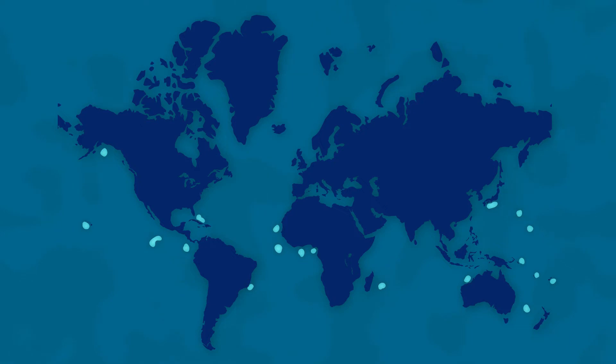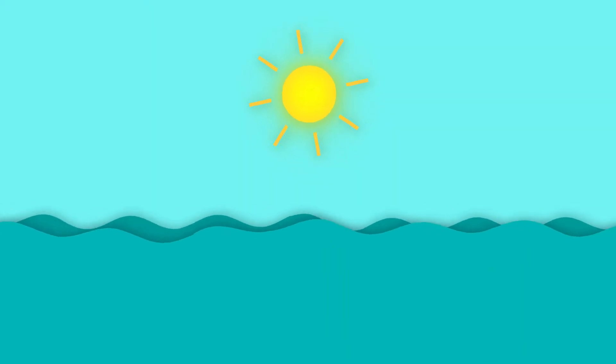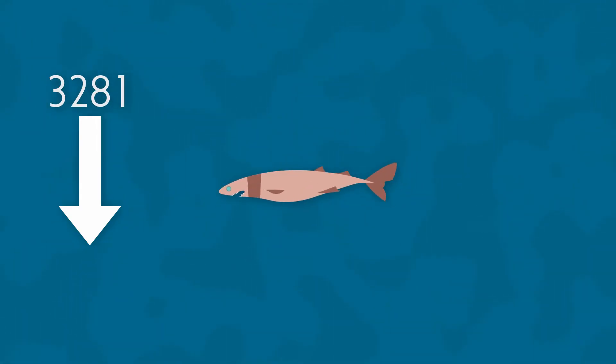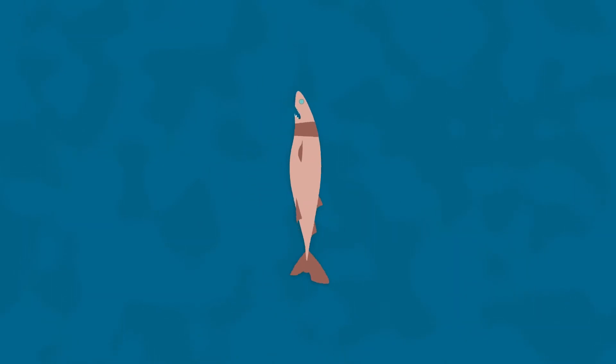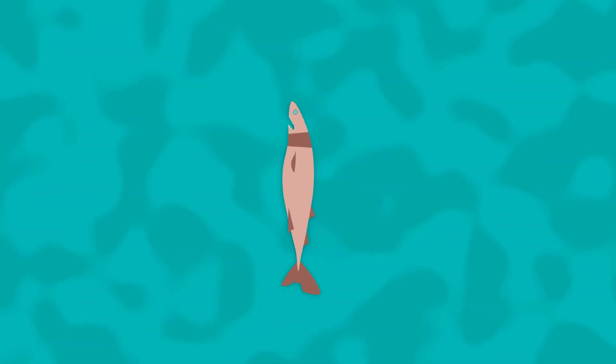Cookie-cutter sharks are found in warm ocean waters near islands. During the day, they reside in the open ocean at depths as deep as 3,281 feet below the surface. As the sun sets, these sharks ascend from the deep to hunt.